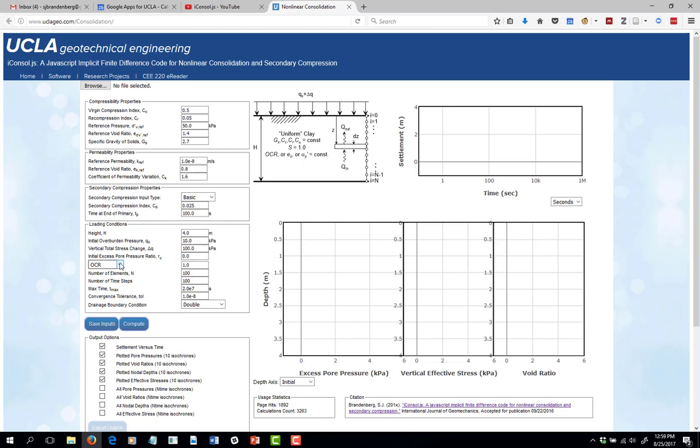Now moving down, we have this little drop-down menu, and this is where you can say whether the OCR, void ratio, or maximum past pressure is constant for this particular soil. Let's keep it at OCR, and we'll do a normally consolidated clay, so OCR is 1 initially. So this is a pretty highly compressible soil profile, very low initial overburden pressure, very high change in pressure, OCR is 1. This one's going to have quite a bit of settlement probably.